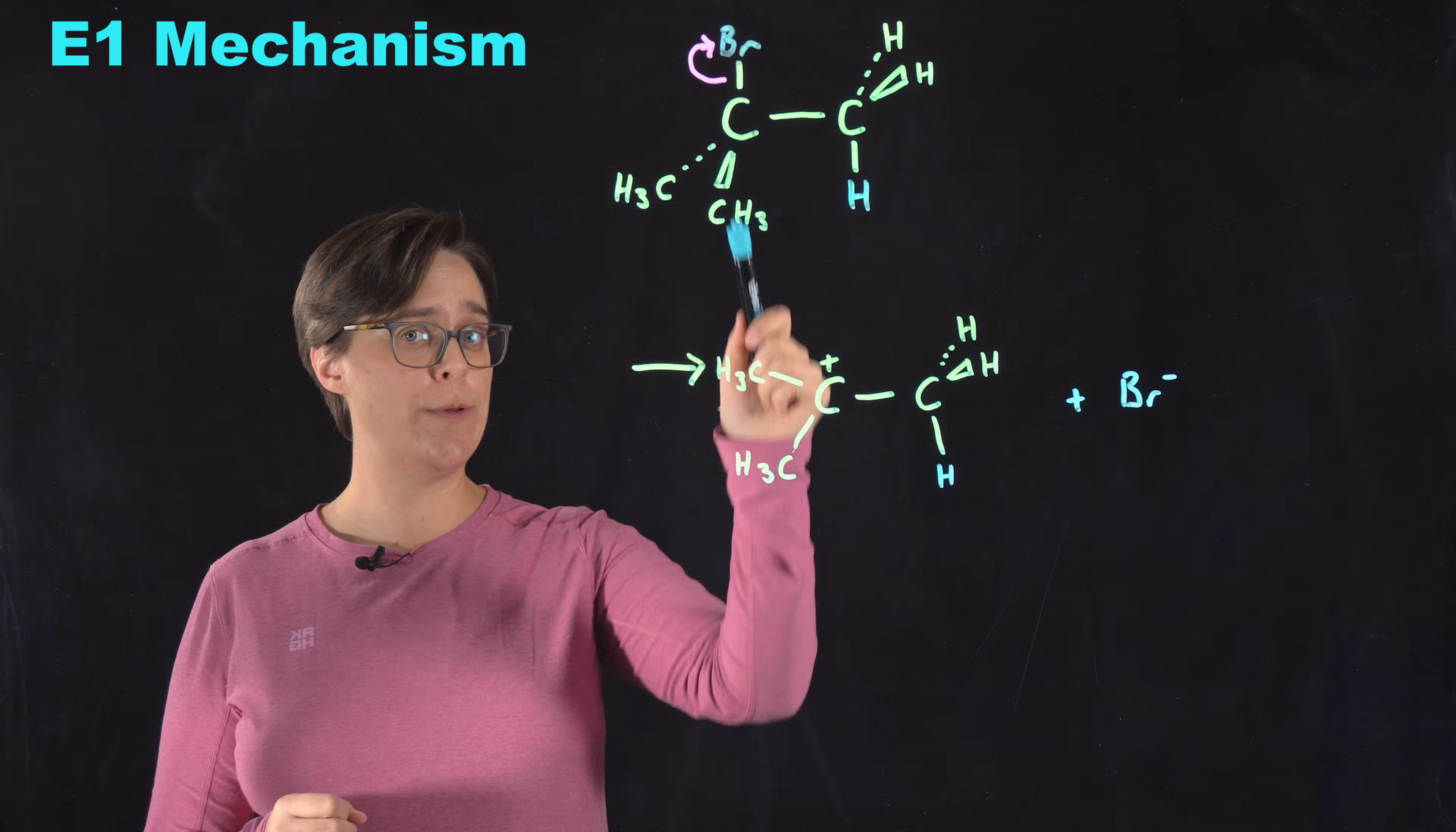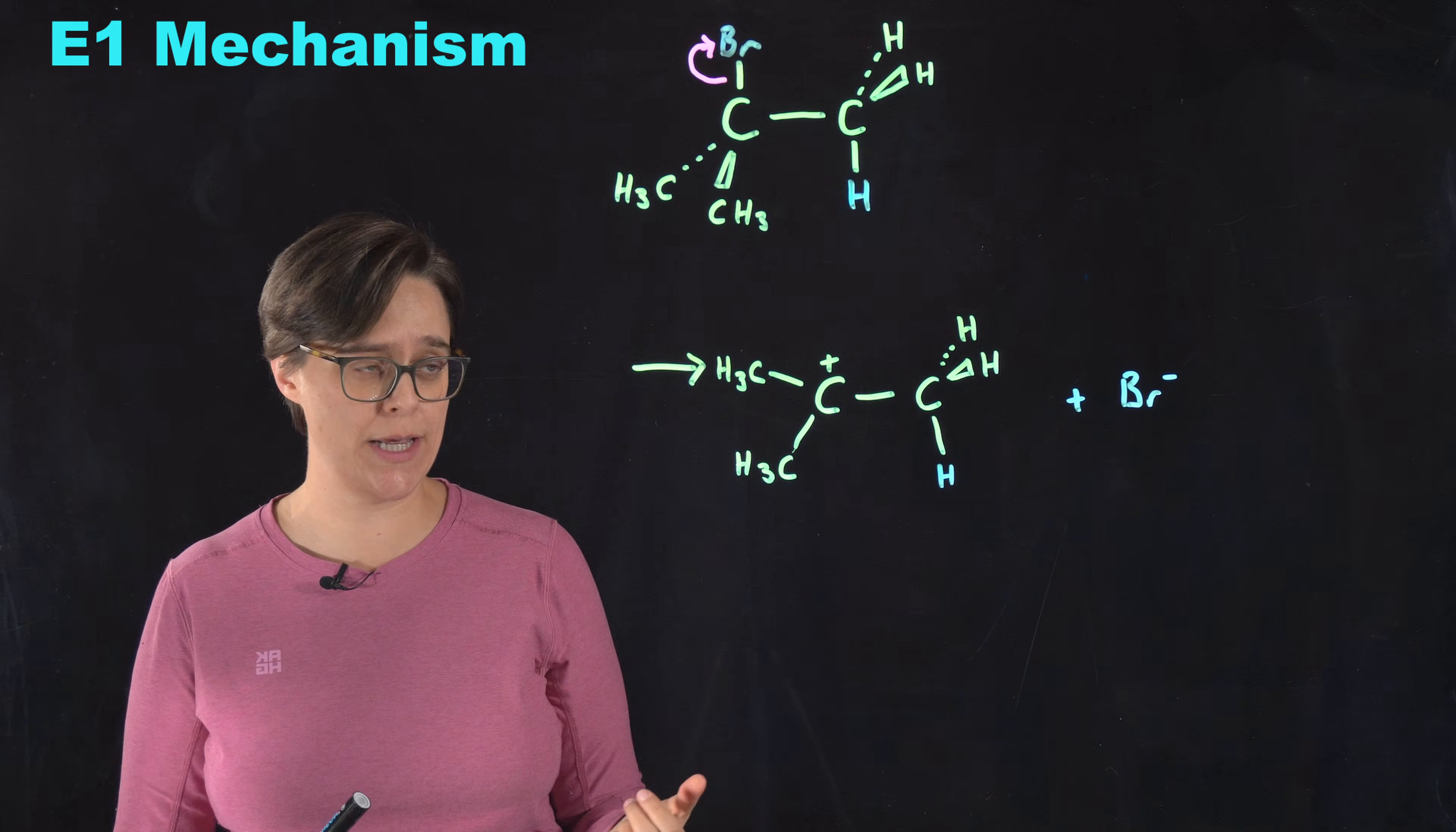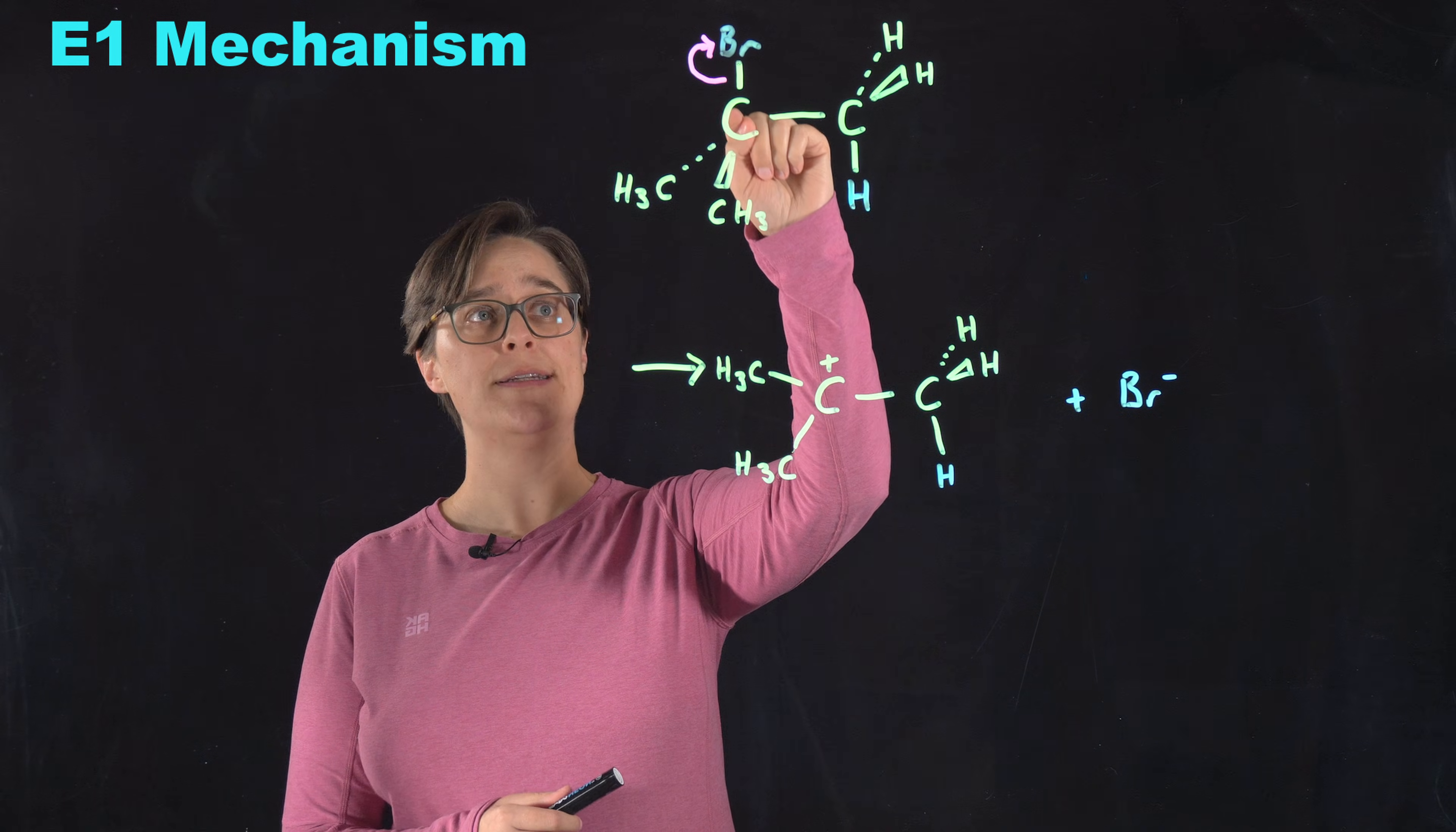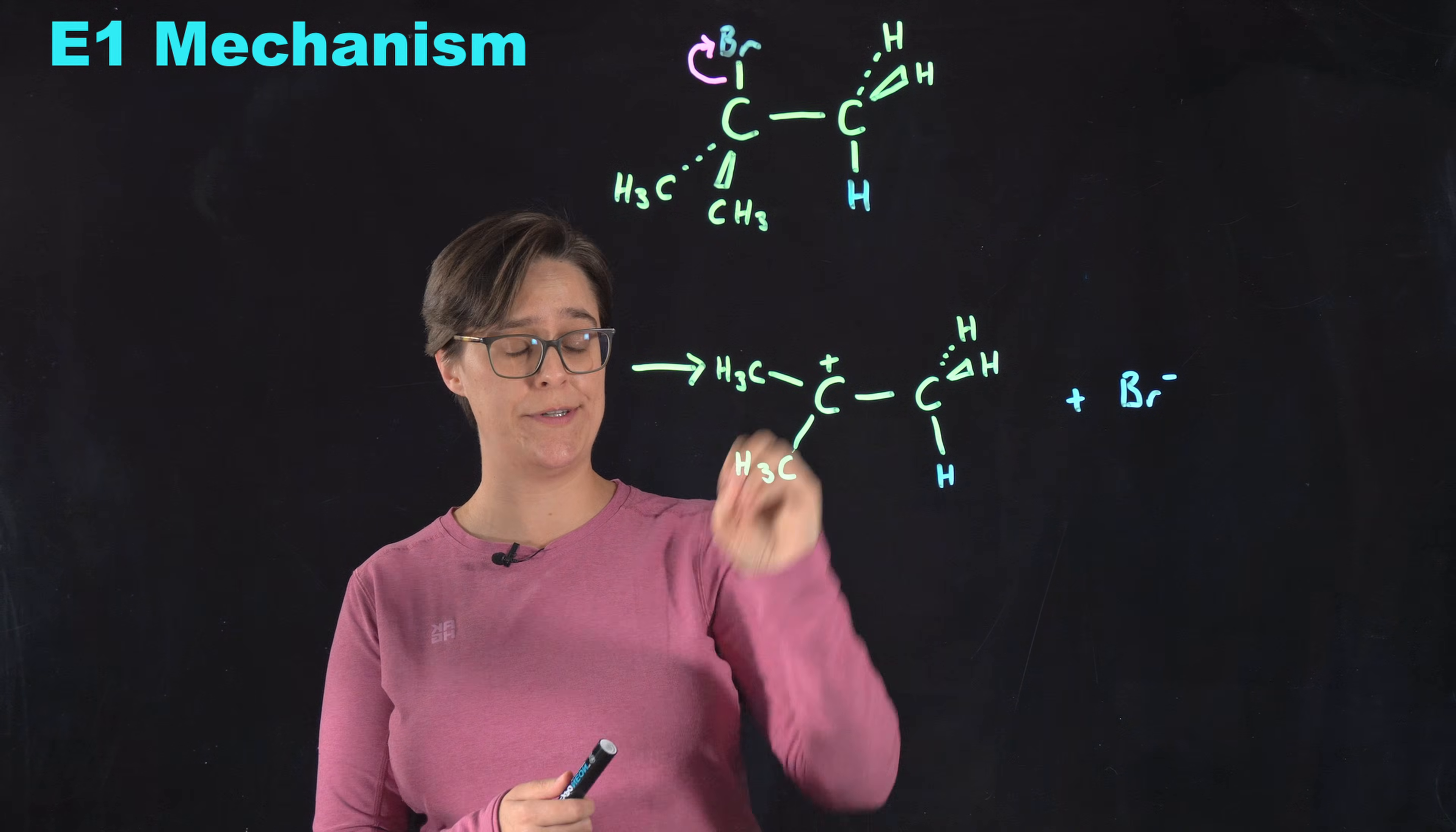This is only going to actually occur if whatever carbocation we are left with is relatively stable, meaning this is most likely to occur if this is a tertiary carbon, meaning three other carbons bonded to it—one, two, three—because that's going to lead to the most stable carbocation.